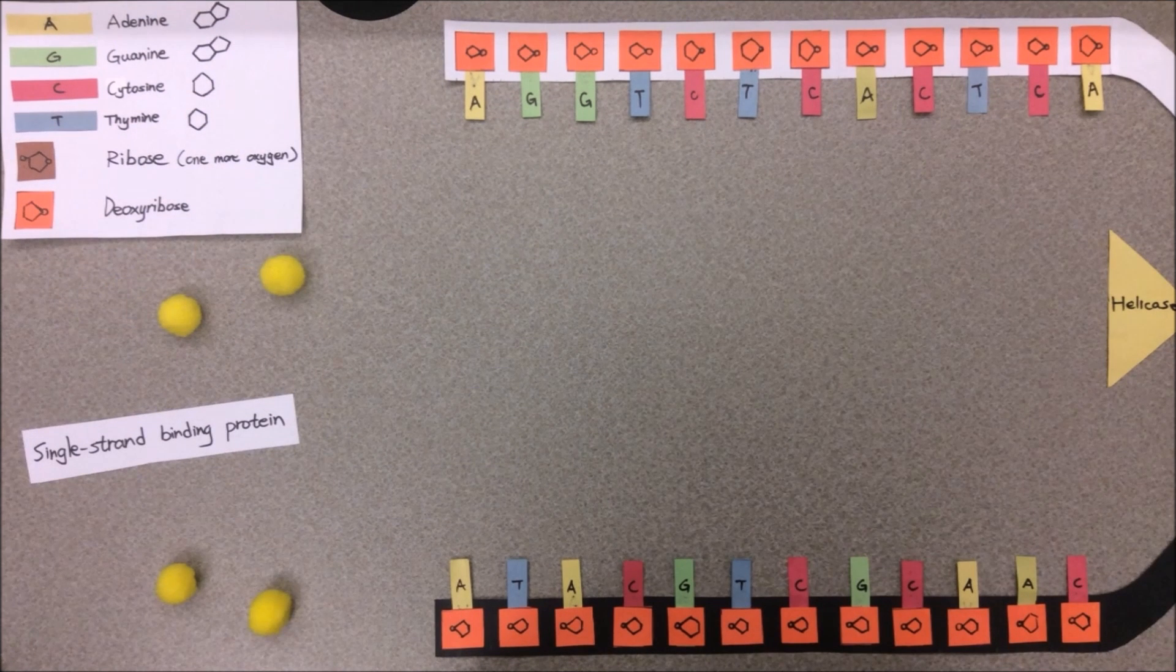DNA single-stranded binding proteins bind to the DNA and stabilize the single-stranded structure that is generated by the action of the helicases. Replication is 100 times faster when these proteins are attached to the single-stranded DNA.